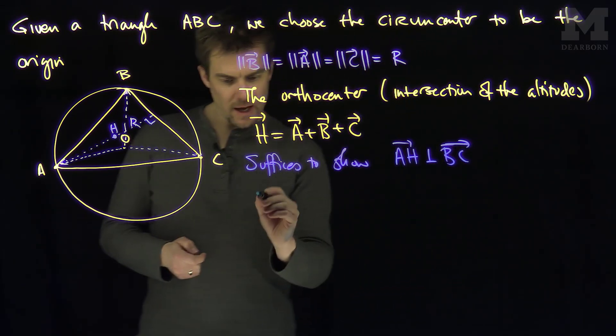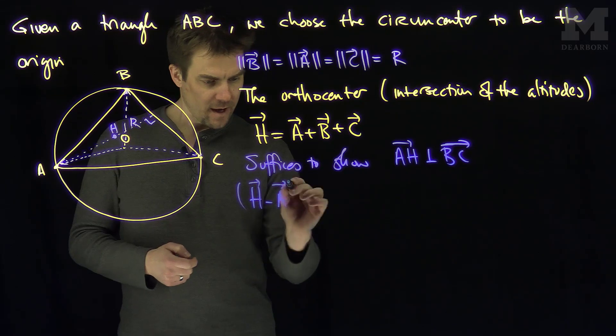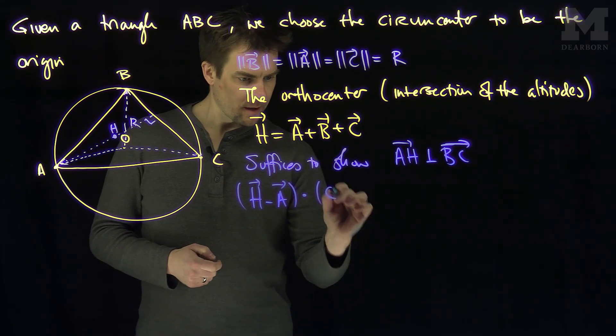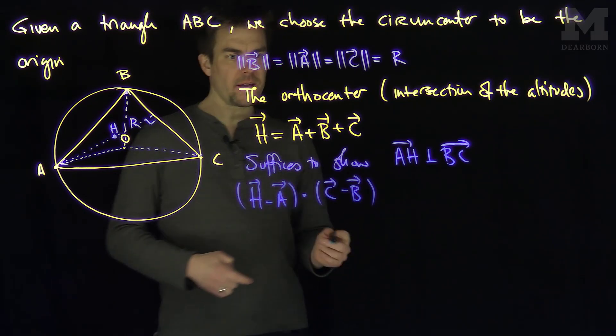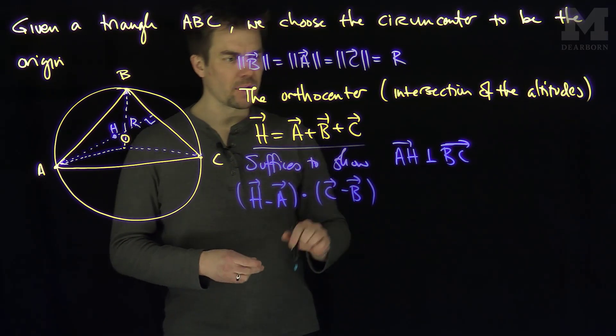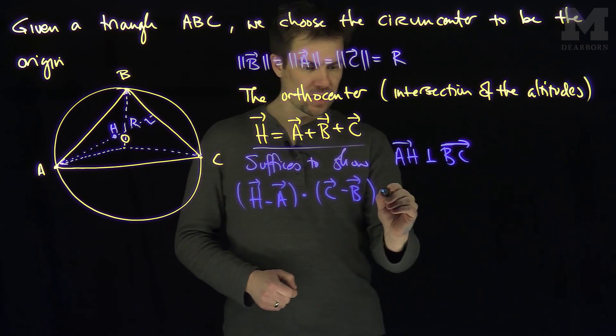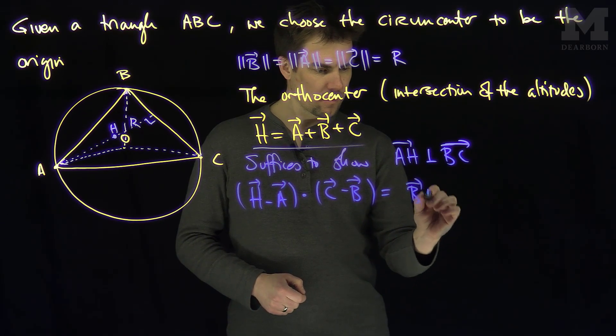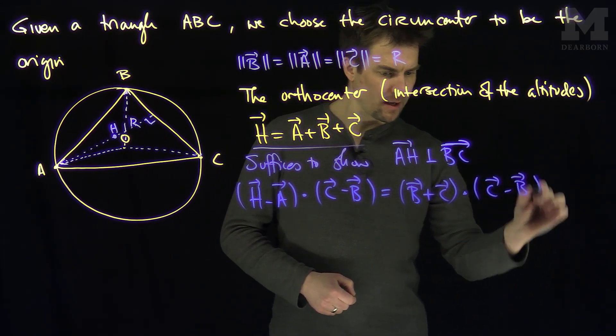So let's look at AH. If I look at H minus A and I dot product that with C minus B, what will we get? Well, what is H? I claim that H is A plus B plus C. So if H is A plus B plus C, then H minus A is just going to be B plus C, and I'm going to dot that with C minus B.